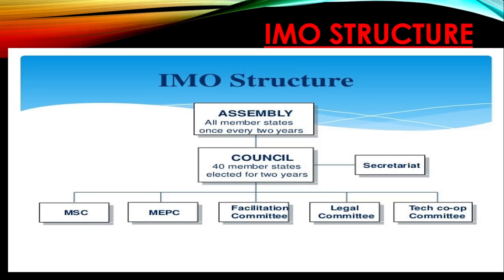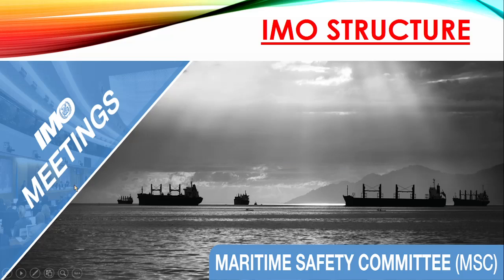As you know, the IMO structure basically consists of assembly, then council, and followed by five main committees which are MSC, MEPC, facilitation, legal, and technical cooperation committee. The most important committees are MSC and MEPC, which are responsible for the major decisions made in the IMO. So let's see about the Maritime Safety Committee.